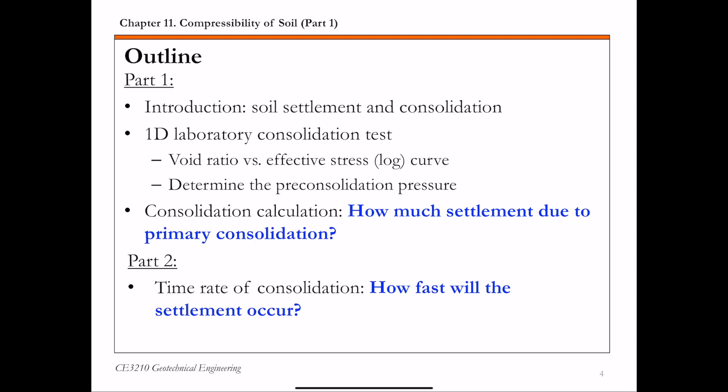For this chapter, we're going to actually break it into two parts. In part one of this chapter, we're going to talk about what is settlement in soils and what is consolidation, and how do you use one-dimensional laboratory consolidation tests to find out the relationship between void ratio, effective stress, and to determine the preconsolidation pressure. And the key question we want to answer in part one is how much settlement is expected due to primary consolidation.